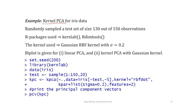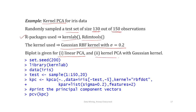As an example, we consider the Iris data set and apply kernel principal component analysis for demonstration. We randomly sampled a test set of size 130 out of 150 observations, and used R packages 'kernlab' and 'RLIMtools'. We used a Gaussian RBF kernel with σ = 0.2, and also give results for some other kernel functions.